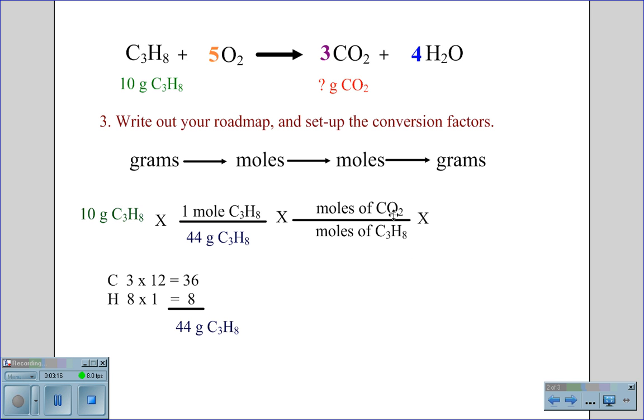Therefore, the moles of carbon dioxide will be in the numerator. We get the numeric values for this conversion factor from the balanced chemical equation. In this case, we have three moles of carbon dioxide for every one mole of propane.